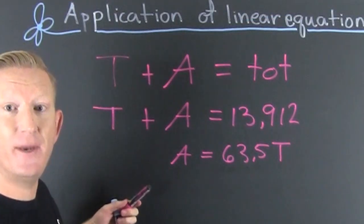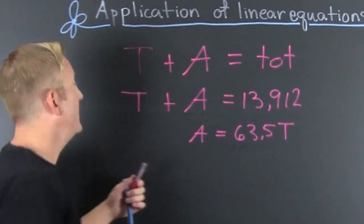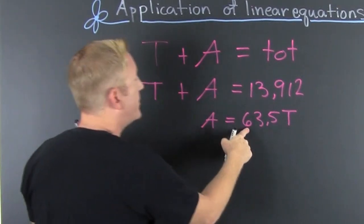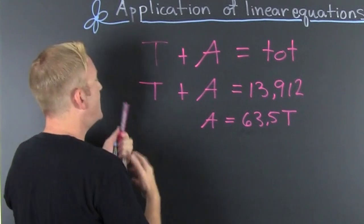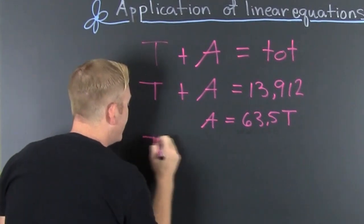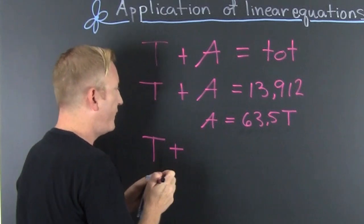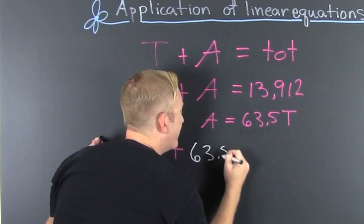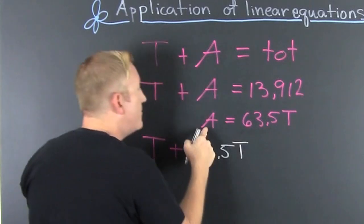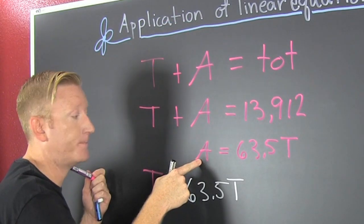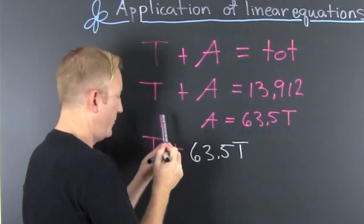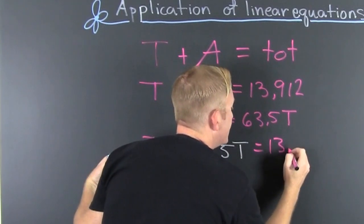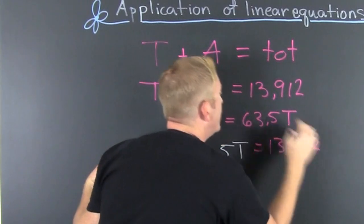What am I going to do with that transformation? I'm going to make one linear equation. What do I have in place of the apples? I can now put 63.5 times the taffy. So I'm going to have the taffy plus—wait for it—63.5 times the taffy, because that's what the apples is. That's going to equal the 13,912 that they previously said this Michigan orchard made.